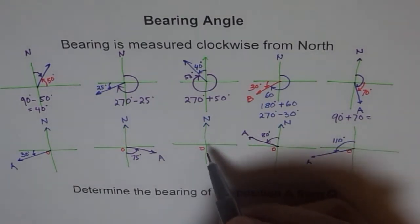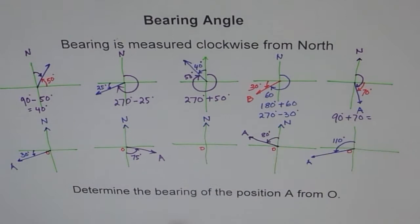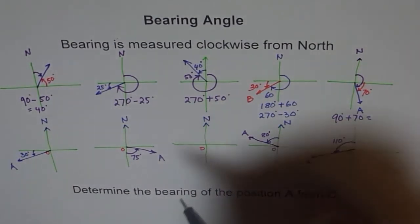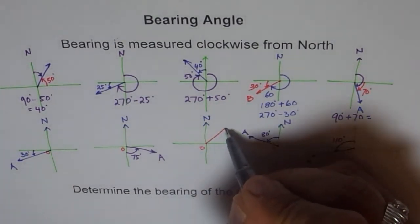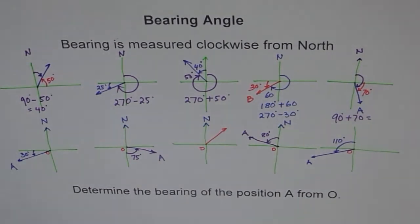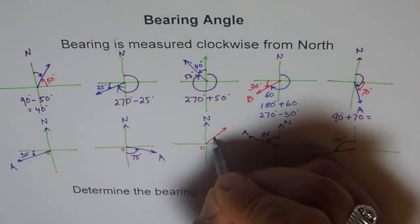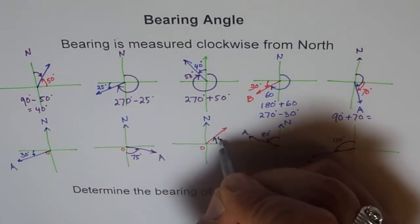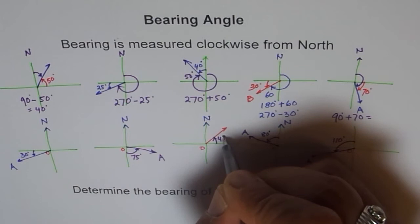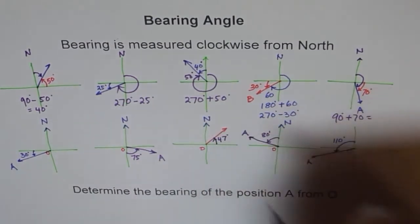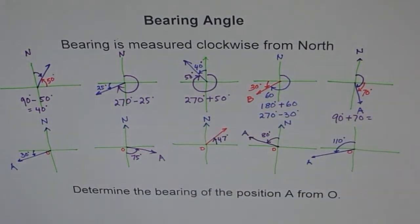Let me give you one more in quadrant one, with an angle of 47 degrees — find the angle of bearing for this. Try these problems. I hope you understand what angle of bearing is. We'll take two more examples in which we'll talk about angle of bearing.